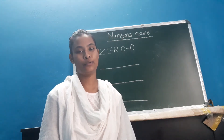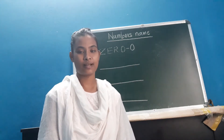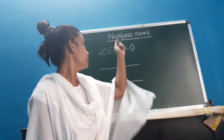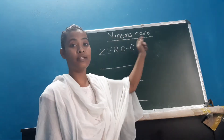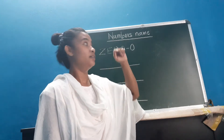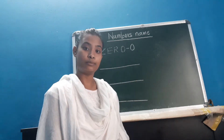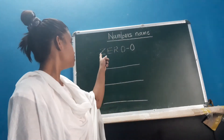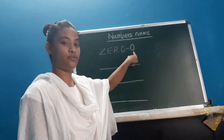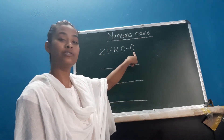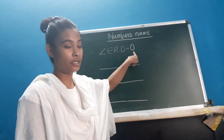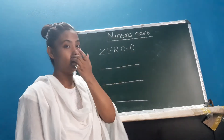How are you? I hope you all are fine. So today in our maths class we will learn something new. Today we will learn number names — the number names of all the numbers. But first we will learn number 0. The spelling of 0. Number names means the spelling. So let's begin.